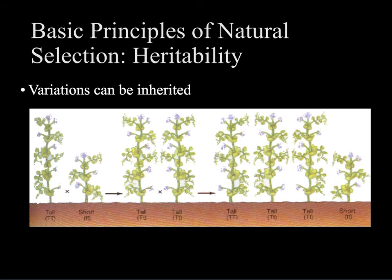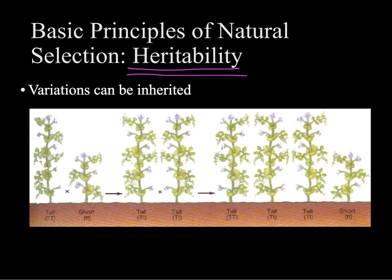The second principle is heritability — the idea that these variations that exist can be passed on. Thinking about everything we've been doing with genetics, these are not just random things that organisms learn how to do, but they're involved in the genes and the DNA that's being passed on from one generation to the next.